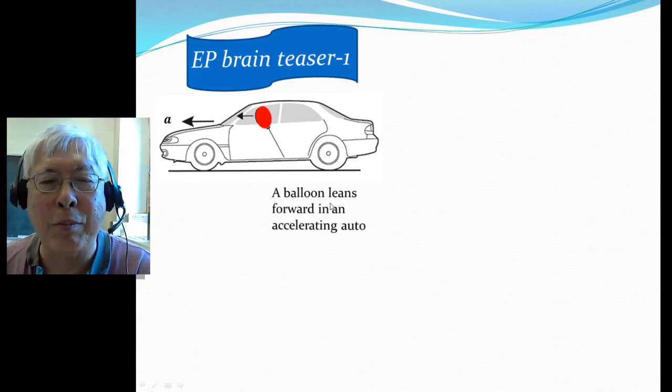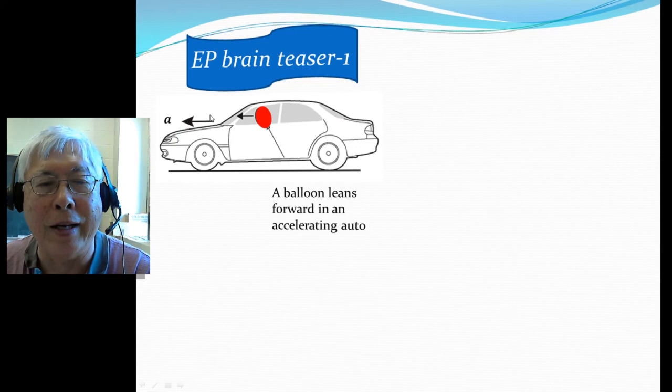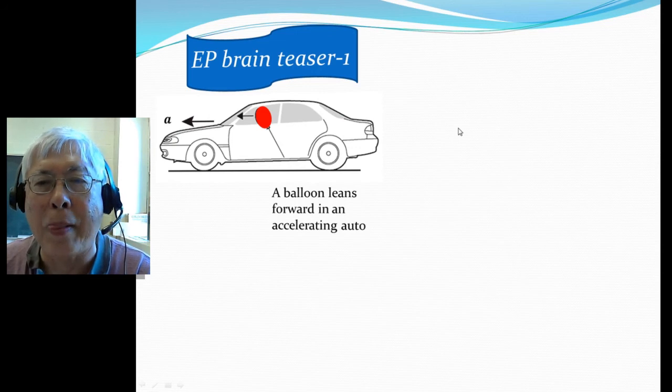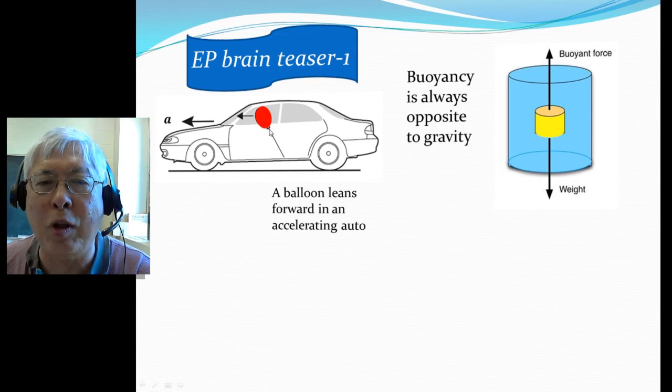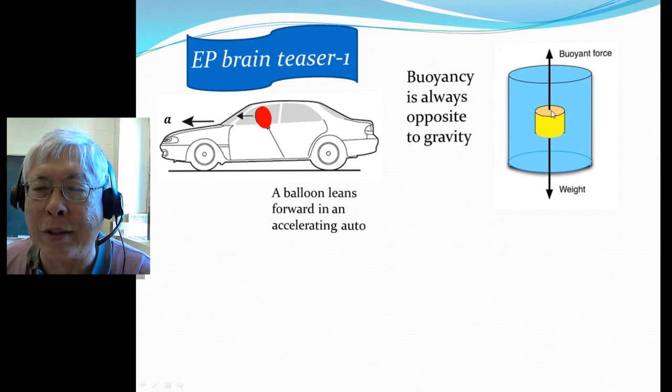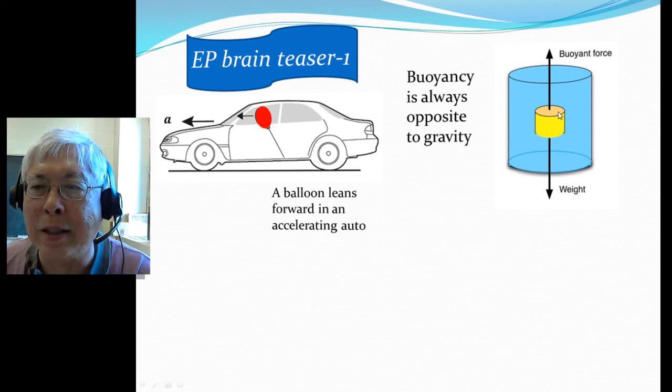So it looks like the balloon leans forward when in an accelerating car. To explain this simply, remember the balloon is floating because of buoyancy, and buoyancy is always opposite to gravity. That's how buoyancy works. If you have a volume with the same fluid, the upward force and downward force exactly cancel.